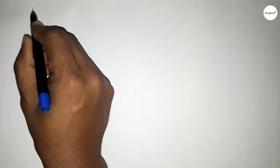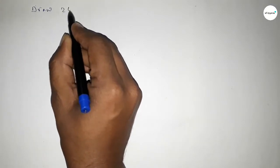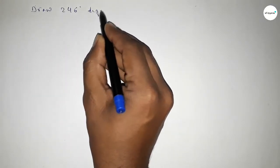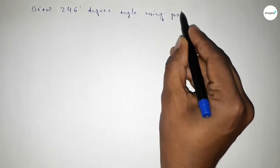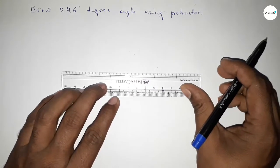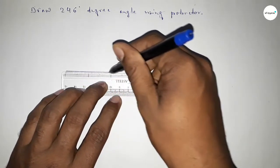Hi everyone, welcome to Essay Share Classes. Today in this video, we have to draw a 246-degree angle using a protractor. Let's start the video. First of all, we draw a line of any length, marking point B here and point C here.